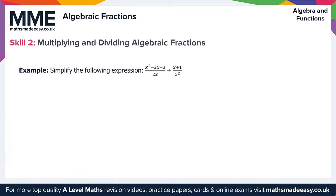The second skill we need when working with algebraic fractions is multiplying and dividing them. We have (x squared minus 2x minus 3) over 2x, divided by (x plus 1) over x squared. When dividing fractions, we take the reciprocal of the second fraction, change the division symbol to multiplication, and then multiply and cancel where appropriate. We treat algebraic fractions the exact same way.